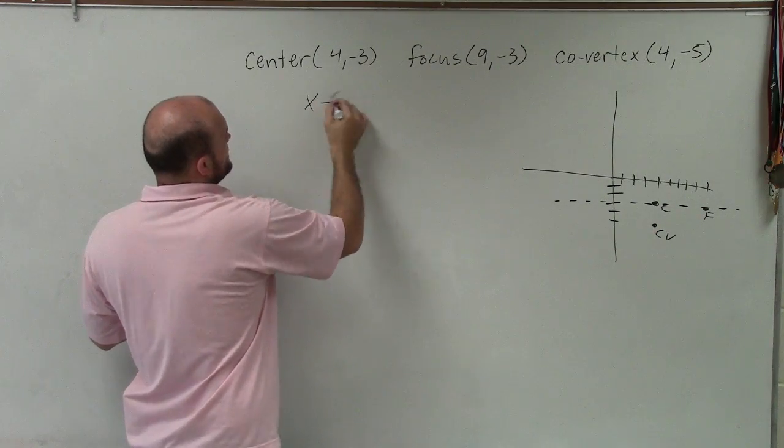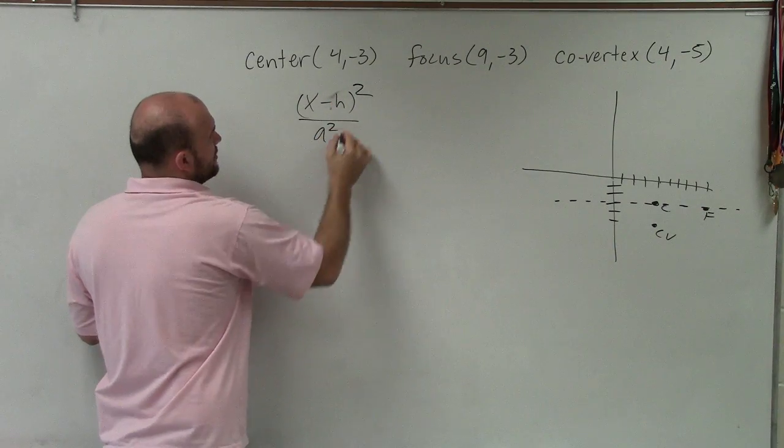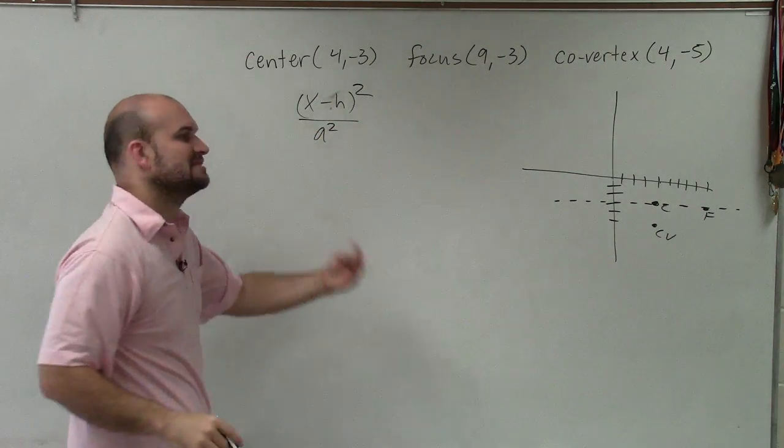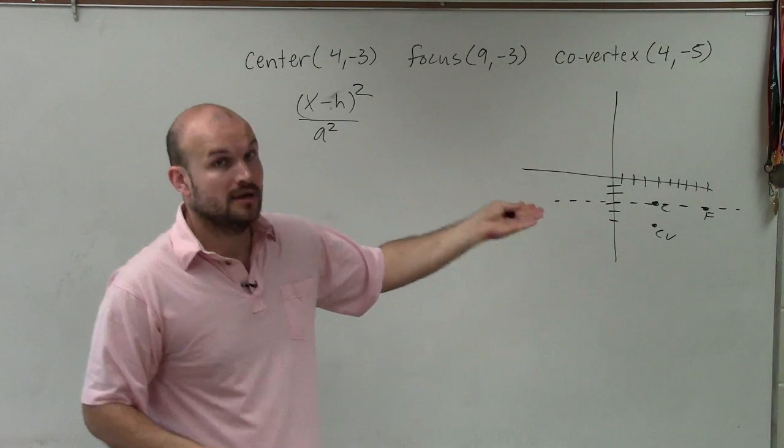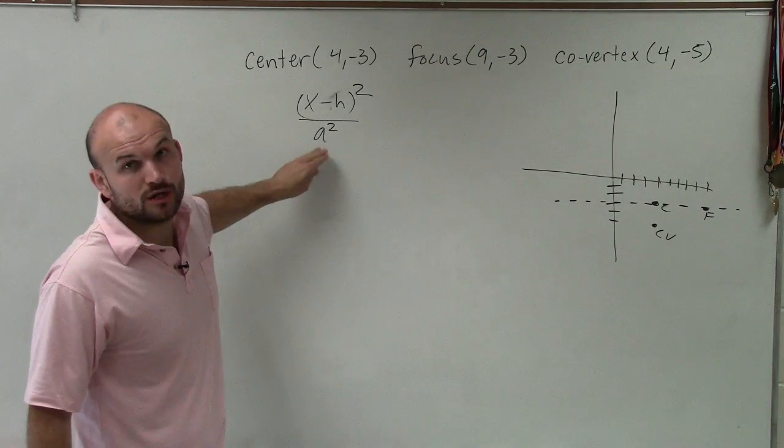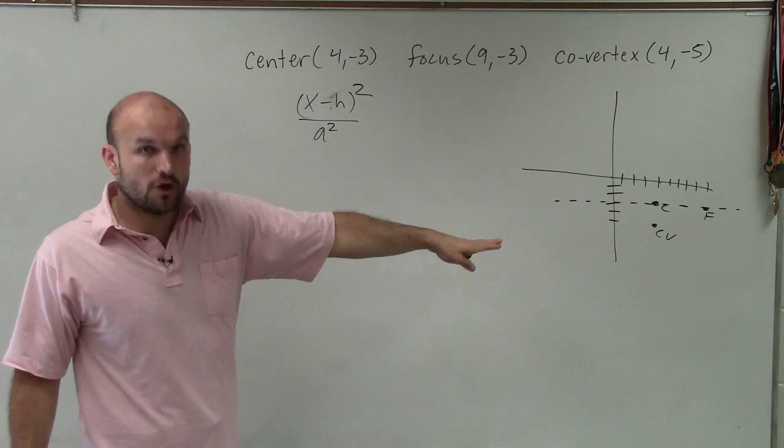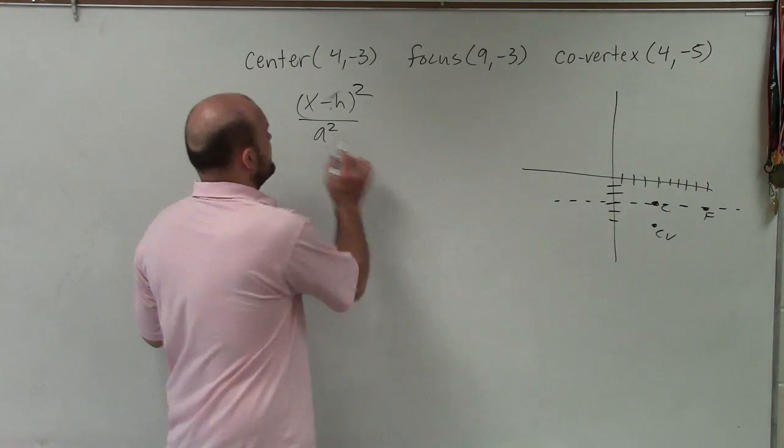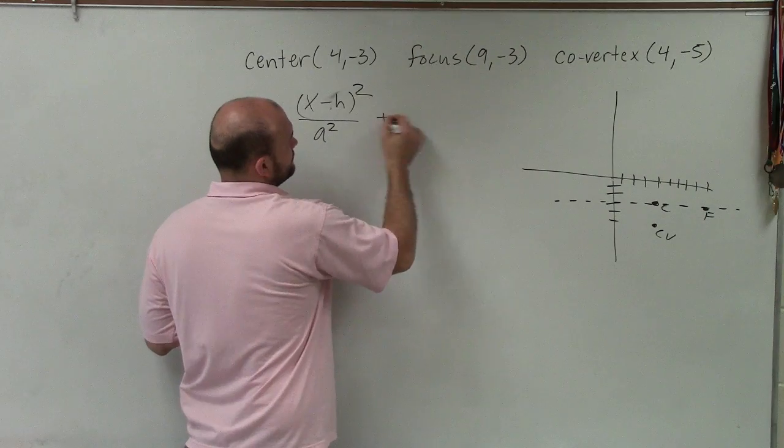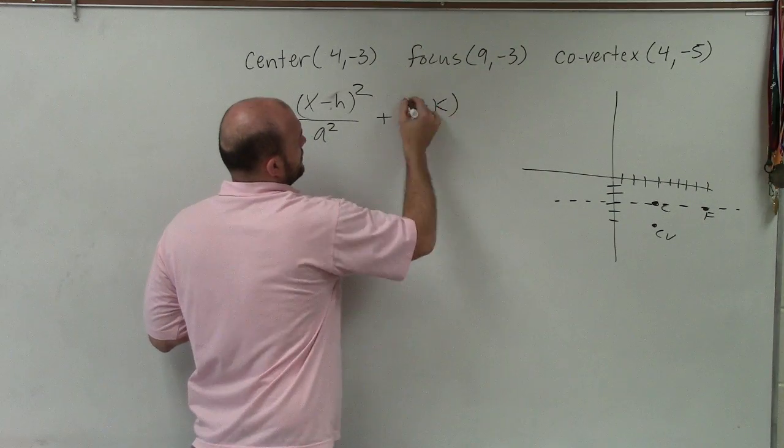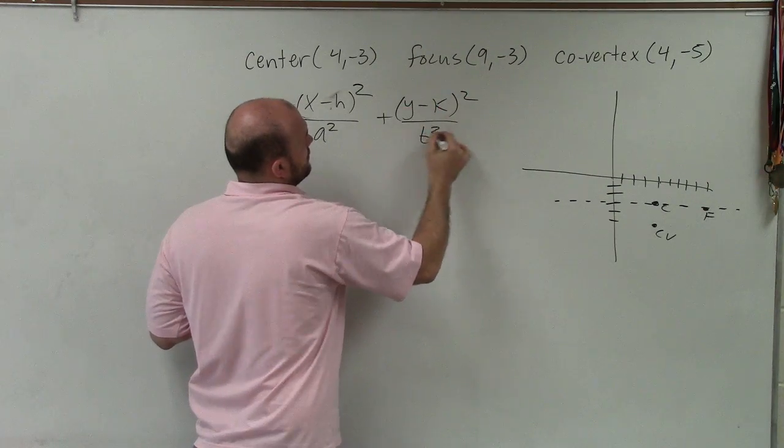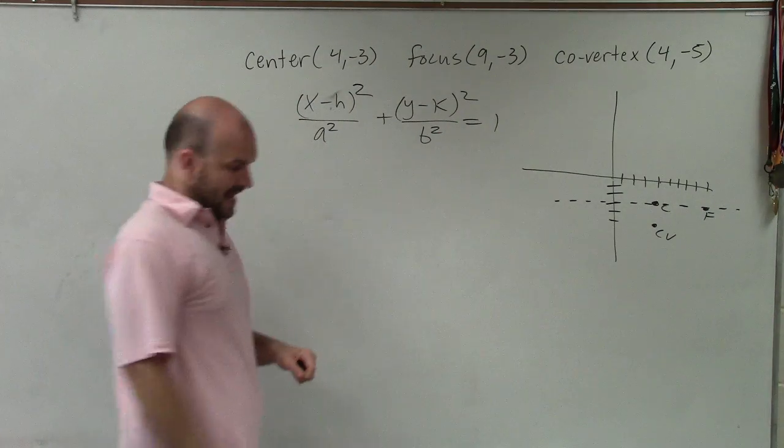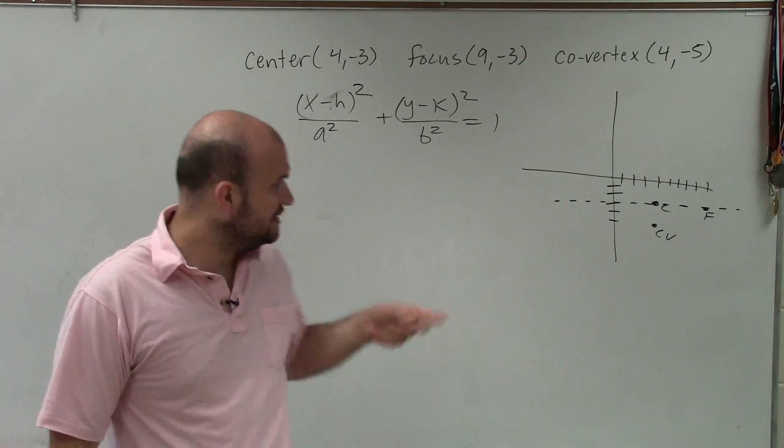So it would be x minus h squared all over a squared, where a represents the distance from the center to the vertices, which we don't know. But a is always going to be larger than the distance from the center to your co-vertices, because that's the major axis. And so when it's horizontal, a is under x. OK, very good.